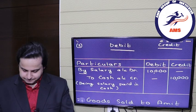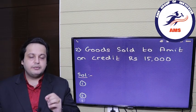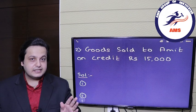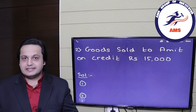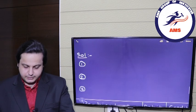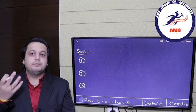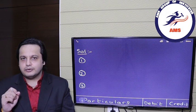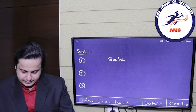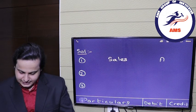Let's take another example. Question two: goods sold to Amit on credit, rupees 15,000. On credit means he doesn't have to pay right now — he will pay after some time. Step one — identify the accounts. The accounts involved are sales and Amit. When selling goods, you never write 'goods account'; you always use 'sales.' So the first account is sales and the second is Mr. Amit.